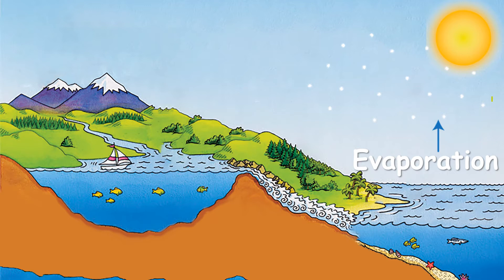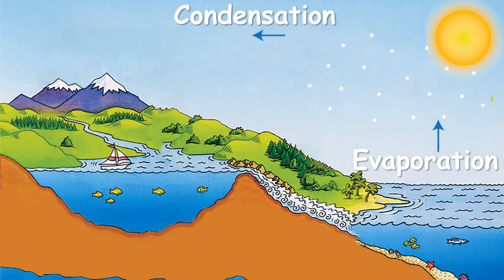As the water vapor rises, the atmosphere becomes colder, so the water vapor turns back into liquid, forming the clouds. This process is called condensation — when water vapor, which is a gas, touches a colder surface and turns back into liquid, forming clouds.